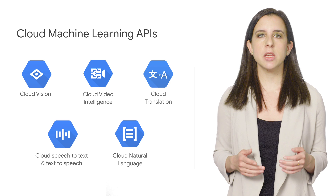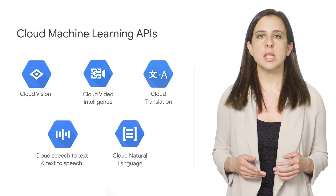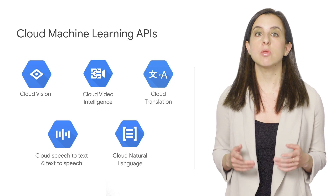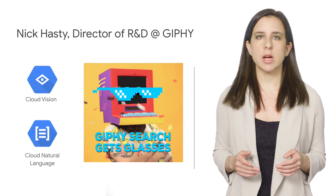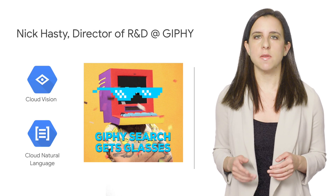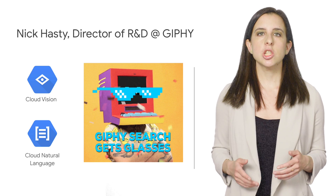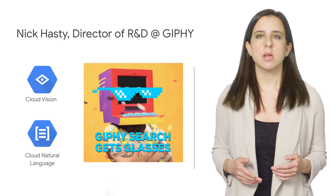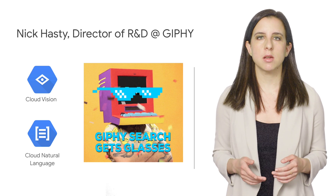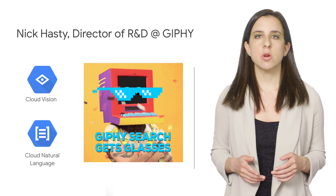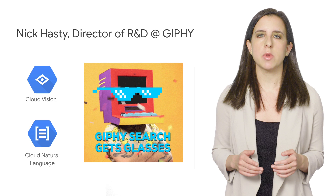I highlighted our Vision and Natural Language APIs with live demos, showing how you can try these APIs directly in the browser. Then we had a cameo from Nick Hastie, director of R&D at Giphy, an app for searching and sharing millions of GIFs. Nick shared how Giphy is using the Vision and Natural Language APIs to optimize Giphy search and GIF tagging, showing that the ML APIs are a great way to get up and running with ML quickly.